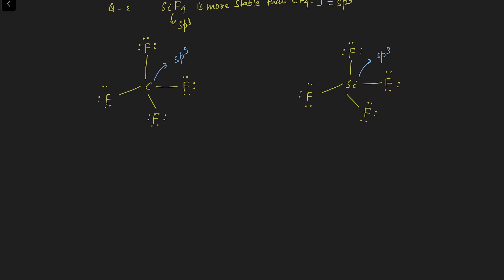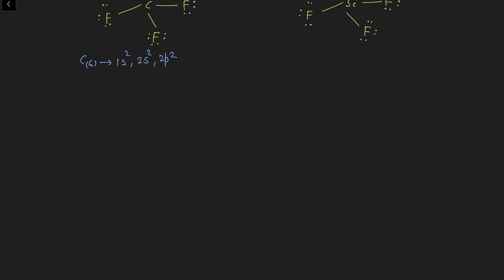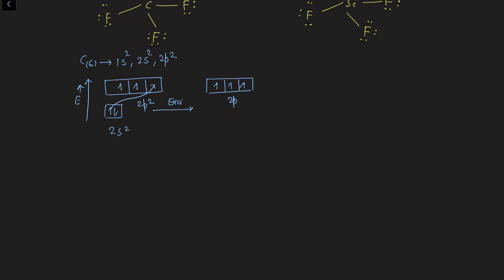Carbon has atomic number 6, with configuration 1s² 2s² 2p². In the ground state, carbon has 2s² and 2p², and on excitation one 2s electron jumps to an empty 2p orbital. The new configuration of carbon becomes 2s¹ 2p³, and using these atomic orbitals, carbon undergoes hybridization to form sp3 hybrid orbitals in CF₄.